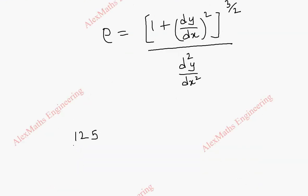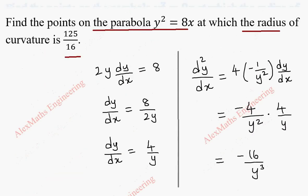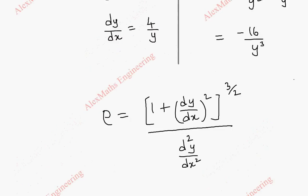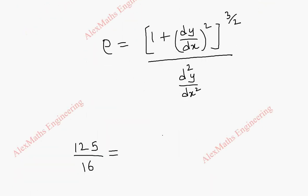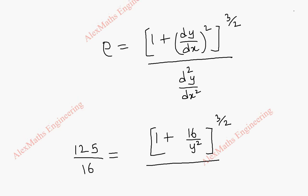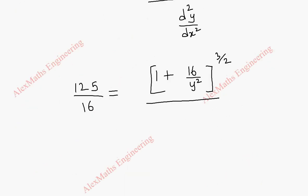So 125 by 16 equals (1 plus (dy/dx)²) to the power 3/2, divided by minus 16 by y cubed. Since dy/dx is 4 by y, we replace (dy/dx)² with 16 by y squared. The denominator is minus 16 by y cubed.